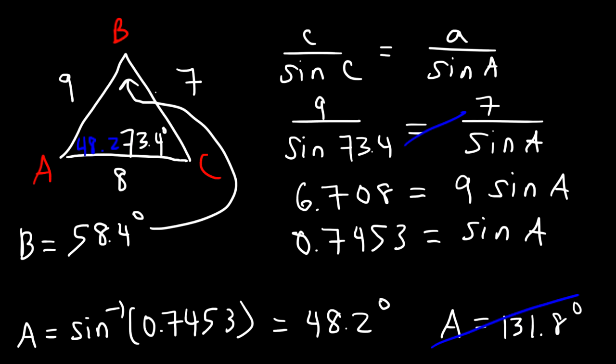So if you have all three sides, you need to use the law of cosines to find the first angle, and then you can use the law of sines to find everything else. That's it for this lesson.